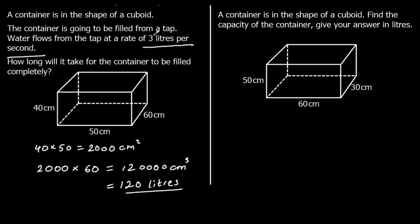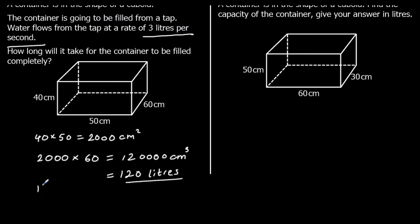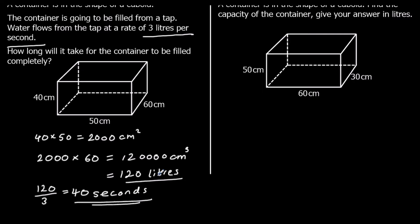Water flows in at 3 liters per second — how long does it take to fill? We've got 120 liters with 3 liters filled per second, so 120 divided by 3. 12 over 3 is 4, add the zero — so 40 seconds. 40 seconds with 3 liters every second gives 120 liters.